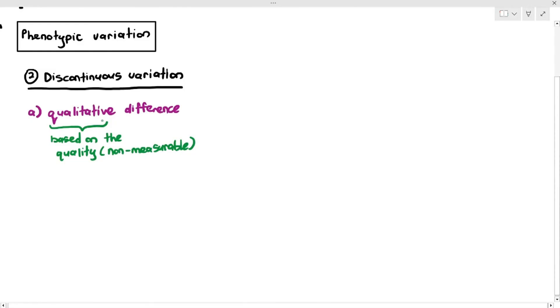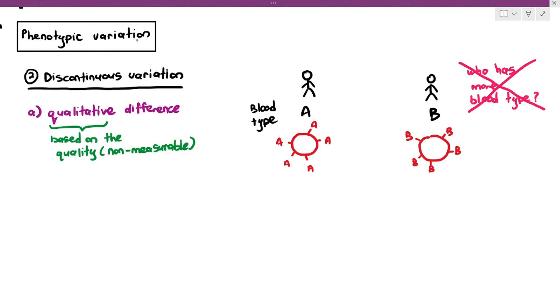not quantitative. So it's based on the quality of the phenotype. It's usually something that does not have to be measured. As an example, blood type. One person has blood type A and one person has blood type B. You will never ask the person who has more blood type. That question does not make sense.